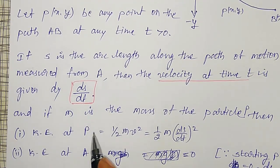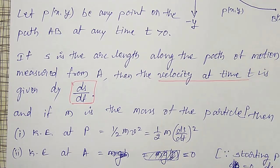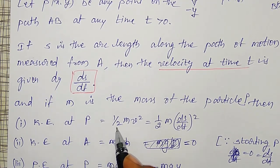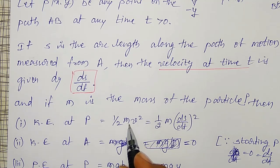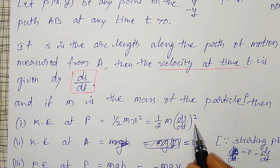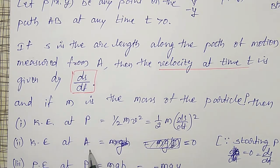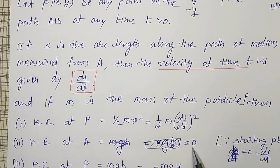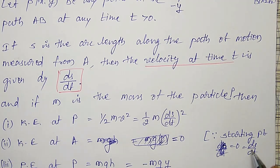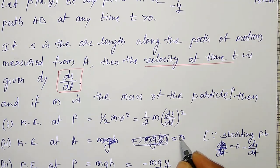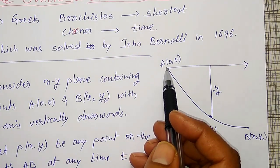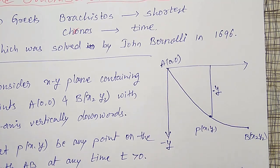If M is the mass of particle P, then kinetic energy at P is given by half M V², where V is the velocity, so it is half M (dS/dt)². The kinetic energy at point A is equal to zero, since it is the starting point and velocity will be zero there.